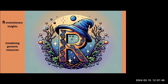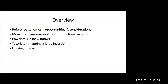Hi everyone, thanks for joining us. Sorry I'm not there in person. So yeah, it's our pleasure today to talk about combining genomic resources. We're hoping to give a bit of an overview about what you can do when you have a reference genome, where you can map your SNP data to the reference, and how this can shift our understanding of genome evolution to more functional evolution, and some of the techniques, programs, and applications that are out there.